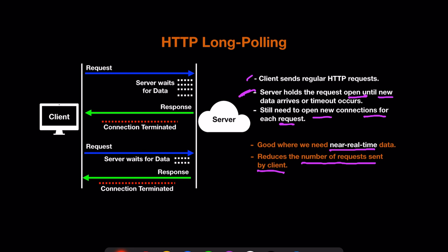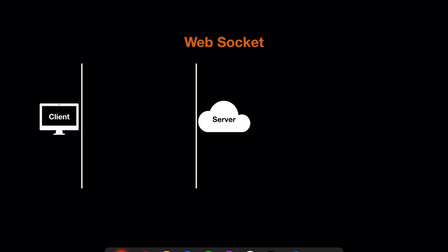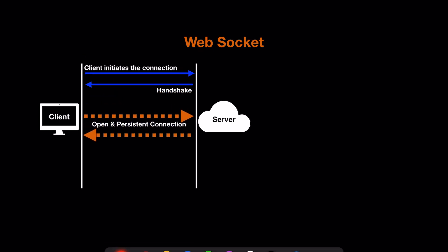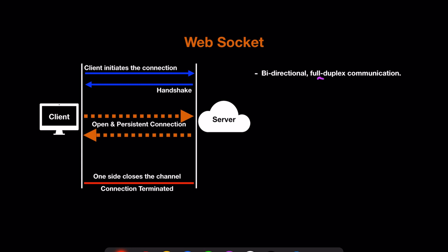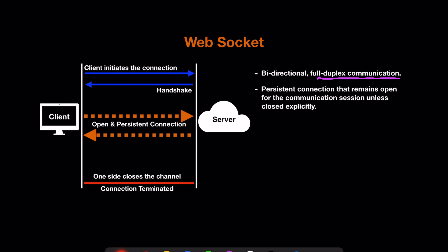WebSocket is an improved version of HTTP long polling. The client initiates the connection and after a handshake, a connection bridge is opened between client and server — it's a bi-directional persistent connection, like a channel or highway where data can travel both ways. If either the client or server explicitly closes the channel, the connection is terminated. This is bi-directional full-duplex communication that remains open for the entire communication session unless closed explicitly.